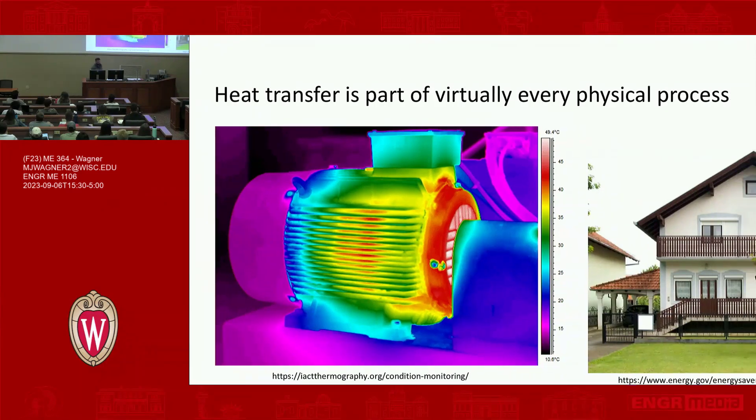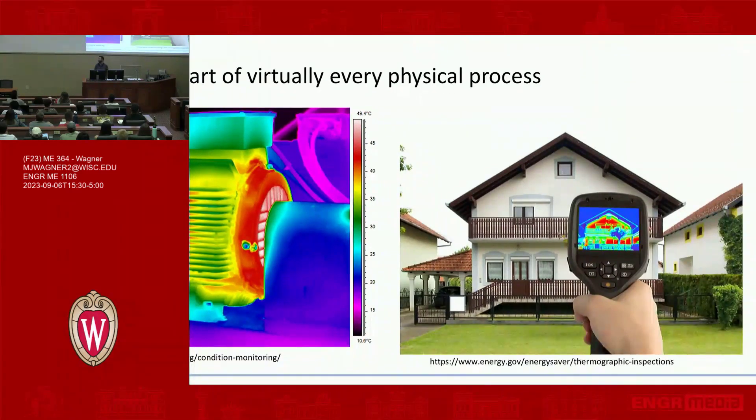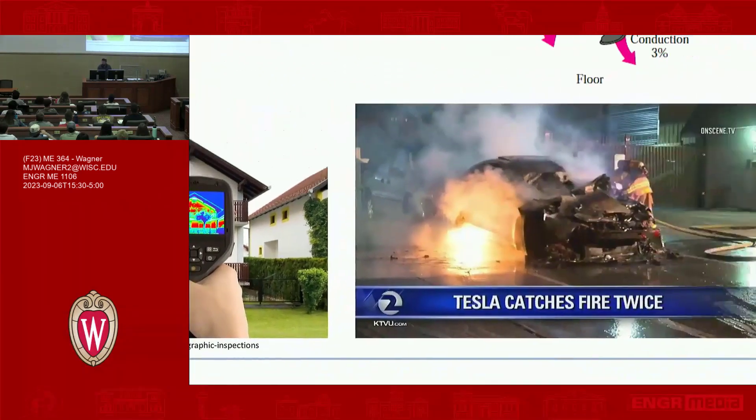Another example, IR cameras. This is an IR camera of a house. This is a big business. People go around, take IR images of your house and tell you how bad your construction company was at making sure your house is insulated. In this case, they didn't bother insulating the third level.